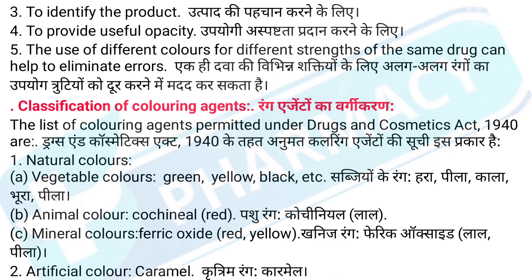Classification of coloring agents permitted under Drugs and Cosmetics Act 1940: 1. Natural colors. A. Vegetable colors: green, yellow, black, etc. Sabjiyon ke rang: hara, peela, kaala, bhoora. B. Animal color: cochineal, red. Pashu rang: cochineal, lal. C. Mineral colors: ferric oxide, red, yellow. Ghanage rang: ferric oxide, lal, peela.